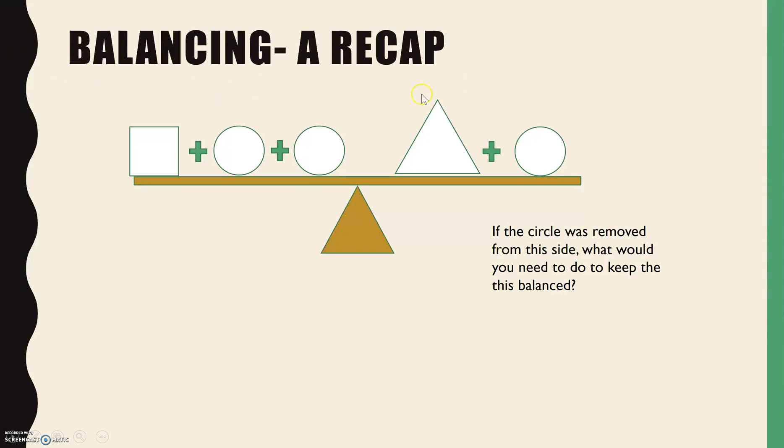So first thing is just a reminder of what you would have covered in maths before, and that is how to balance. We've got an example here with shapes and we've got our balance or seesaw. The first question I'm going to go through: how could we remove this circle here but make sure that this still remains balanced?